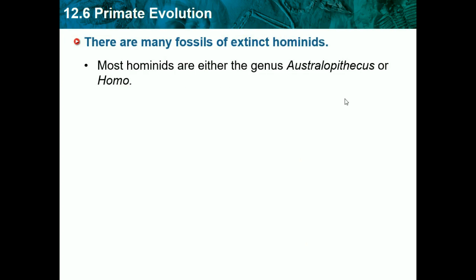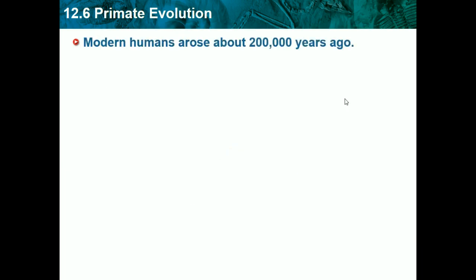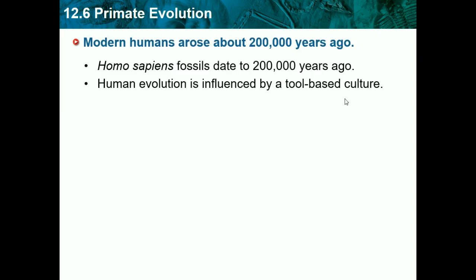Most hominins are either the genus Australopithecus or Homo. Australopithecines were a successful genus. The Homo genus first evolved 2.4 million years ago — this is the species that eventually evolved into humans. Modern humans arose about 200,000 years ago, and Homo sapiens fossils date to about 200,000 years ago. Human evolution is influenced by a tool-based culture.